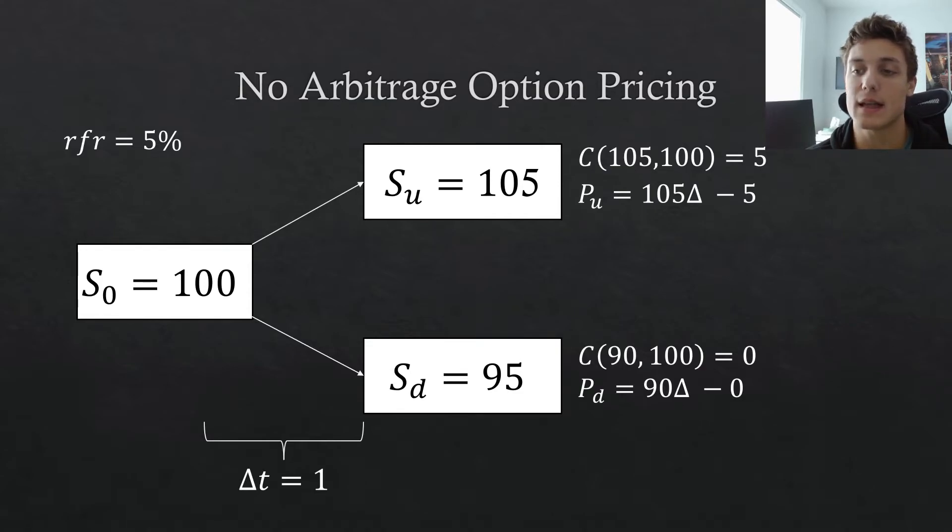We have two portfolios in either state of the world. But this represents a system where there is one unknown and two equations. So we can actually solve for this delta value. And the reason we want to solve for this delta value is because if we can match the portfolio value in either state of the world, whether the stock price increases or decreases, then we are essentially risk neutral, meaning whether the stock price increases or the stock price decreases, we are certain of what the value of this portfolio is going to be one step into the future by this delta T.